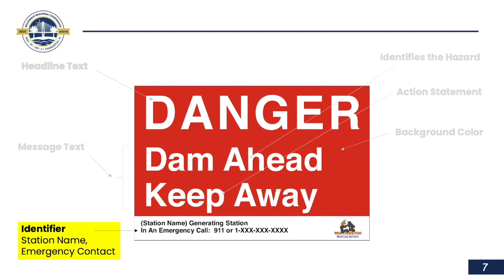The final element of a proper sign is the identifier panel, situated at the bottom of the sign. It's going to include the name of the dam, or in the case of a power generating station, the name of that plant. Beneath that, we'll have where the person needs to call — 911 or a 24-hour staffed control center if you have one. We suggest you put your company logo on there. In areas with multiple languages, you may also want to include a pictogram panel on the left side of the sign as a separate panel.